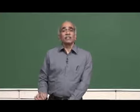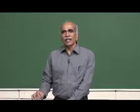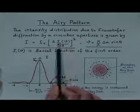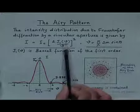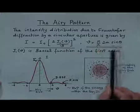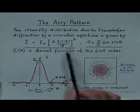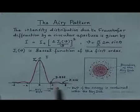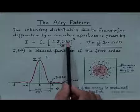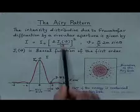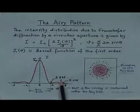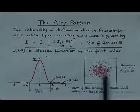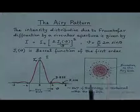This portion of the intensity distribution represents the central disc, which is called the Airy disc. The Airy pattern represents the intensity distribution due to Fraunhofer diffraction by a circular aperture. The derivation is beyond the scope of our discussion here, but the results are important. The intensity distribution is given by an expression involving J₁, the Bessel function of the first order, where the argument v equals (π/λ) × 2a sin θ, and 2a is the diameter of the circular aperture. Approximately 84 percent of the energy is contained within the Airy disc.